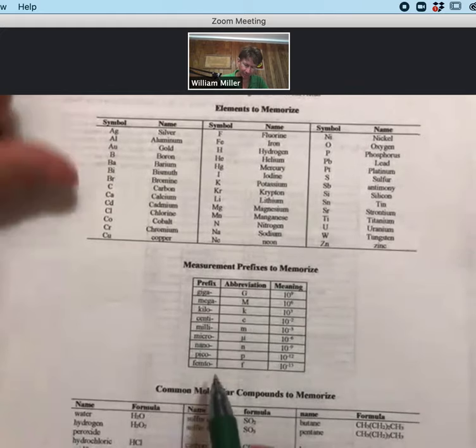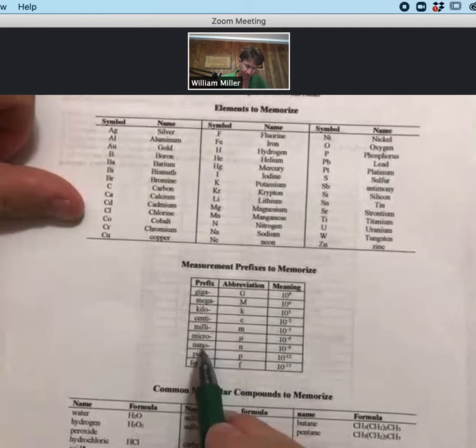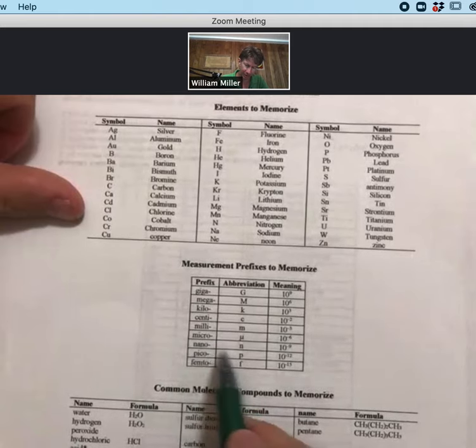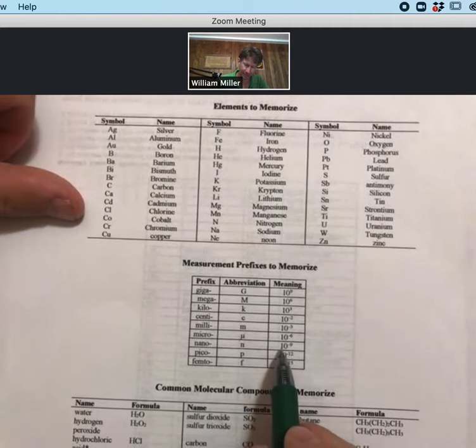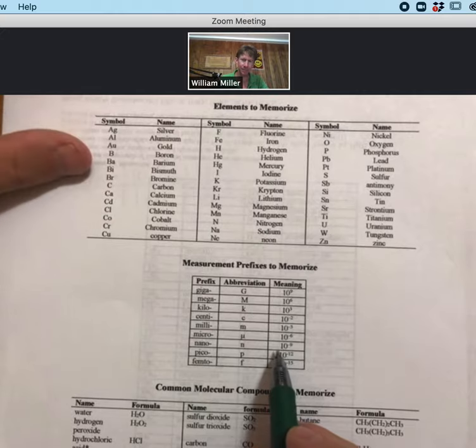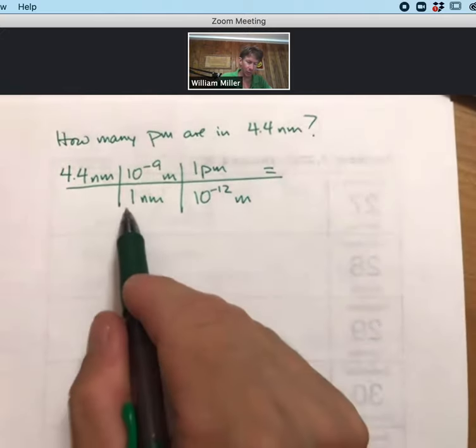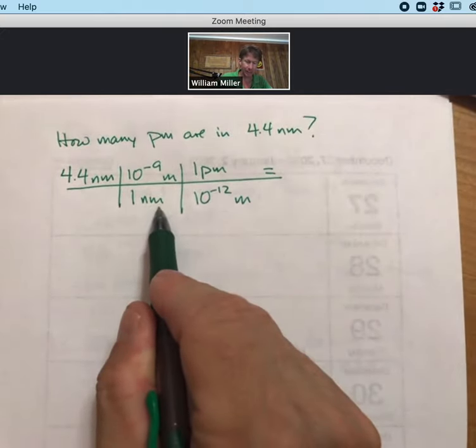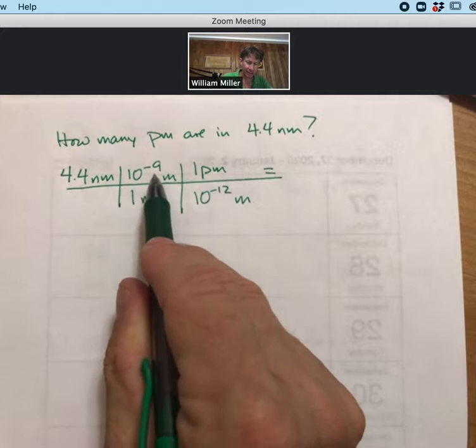And on that table it says the prefix nanometer is n, and that it means 10 to the minus 9. What that means is that one nanometer equals 10 to the minus 9 meters.